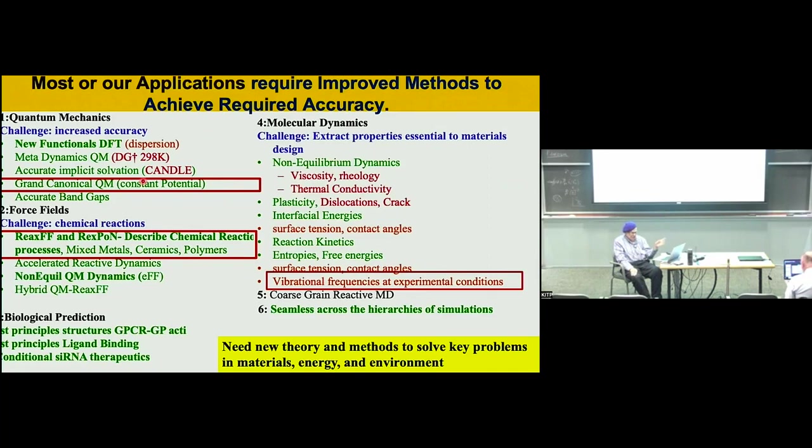We do a lot of quantum mechanics, but quantum mechanics is limited to less than 300 atoms, maybe less than 100 picoseconds — about 3 nanometers. We want to do problems with 10 to 100 nanometers, that's 10,000 to a million atoms, even 100 million atoms. So we need quantum mechanics accuracy on systems way too big for quantum mechanics. We'll talk about reactive force fields.